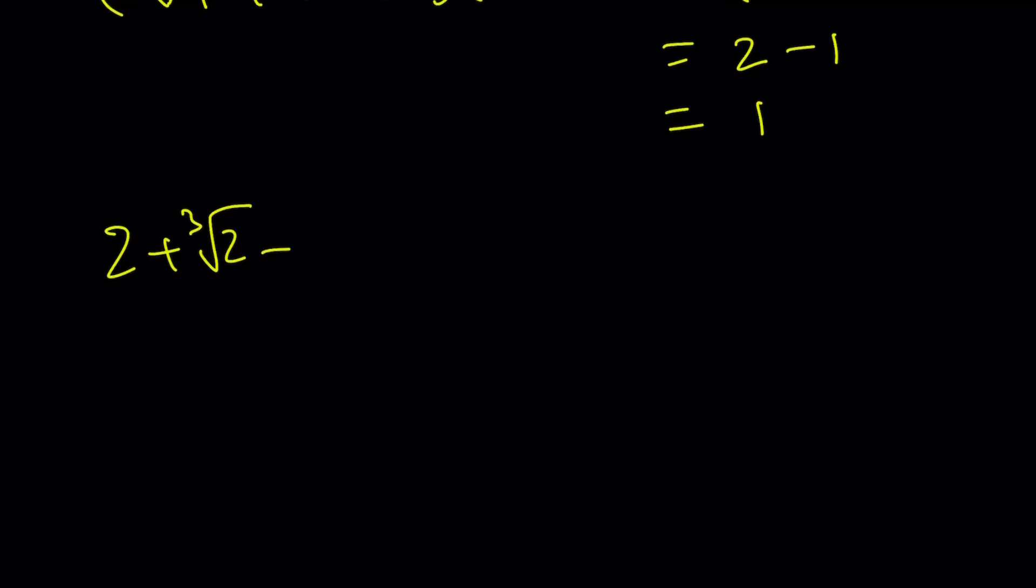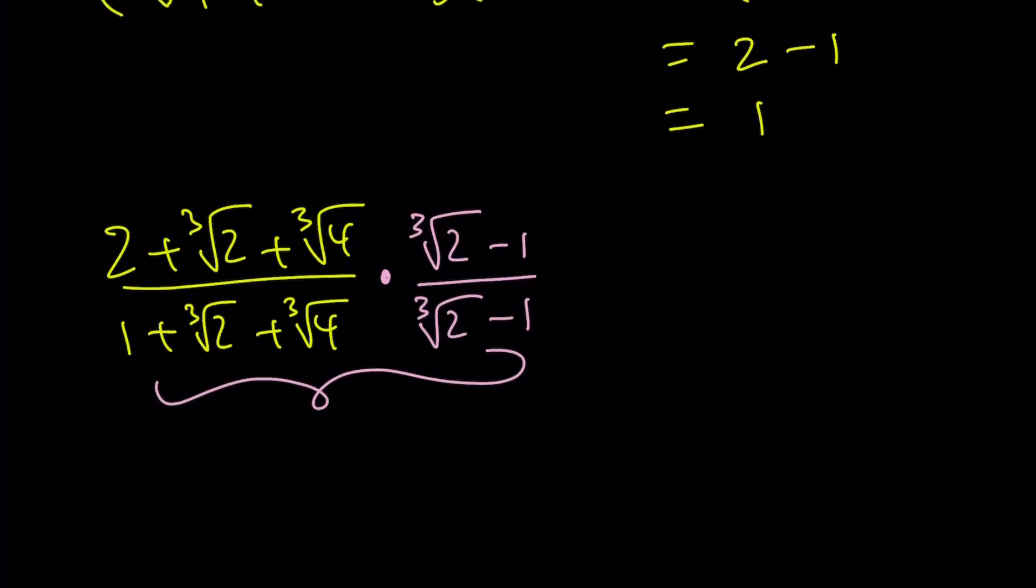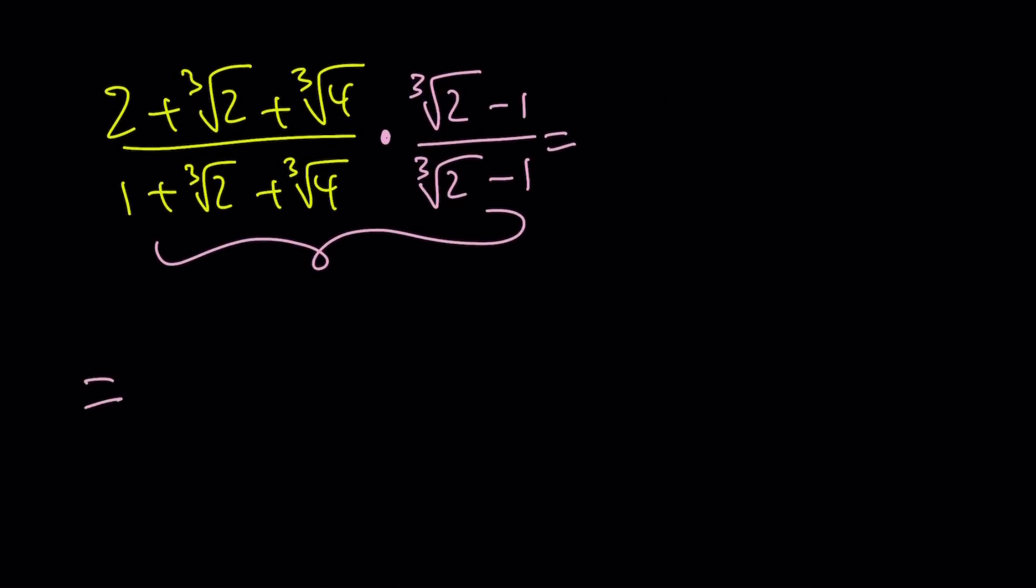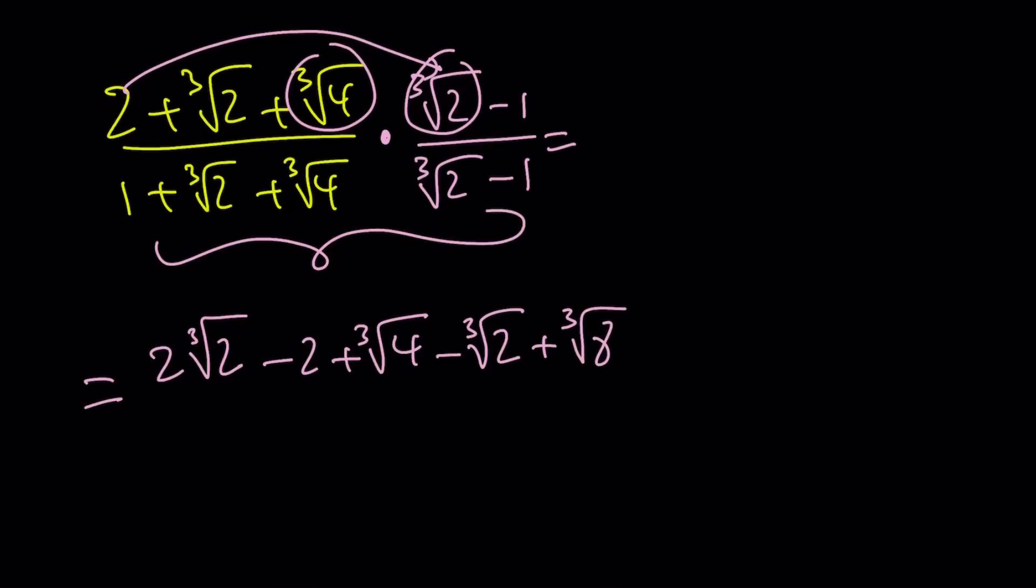2 plus cube root of 2 plus cube root of 4 over 1 plus cube root of 2 plus cube root of 4 multiplied by cube root of 2 minus 1 over cube root of 2 minus 1. This is going to make the difference of 2 cubes. The top is going to make something crazier. So let's distribute. 2 times cube root of 2 minus 2 plus cube root of 4 minus cube root of 2. Cube root of 4 times cube root of 2 is going to be cube root of 8, and we can simplify it later. And this is cube root of 4, divided by 1.